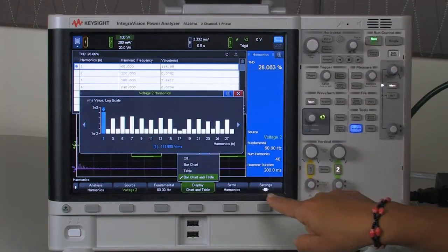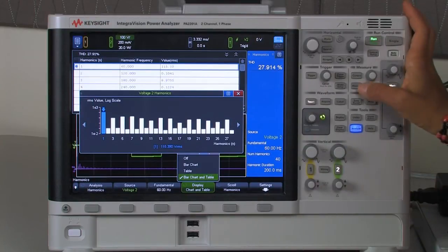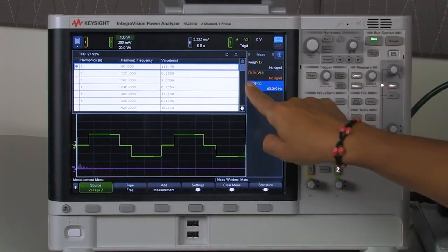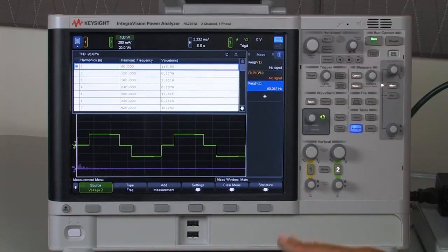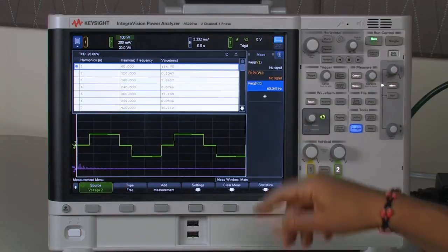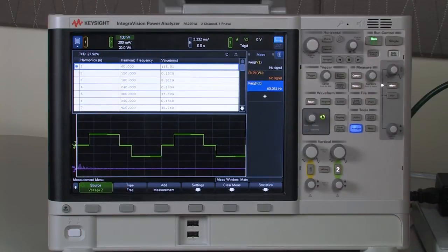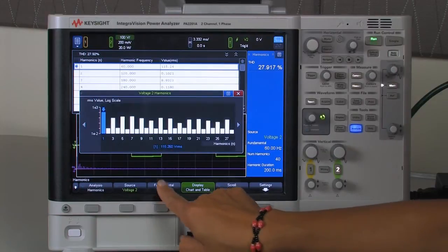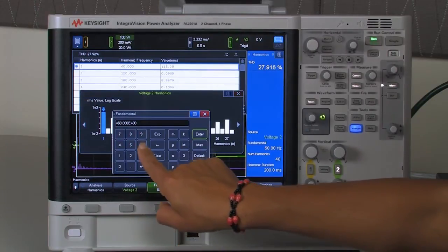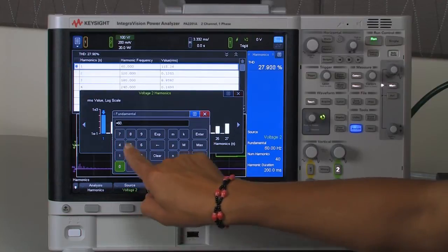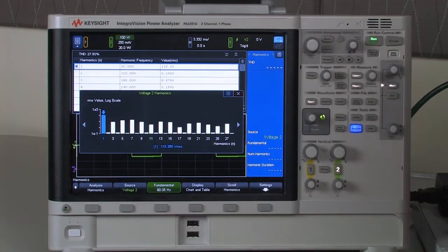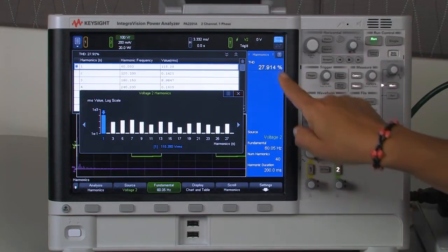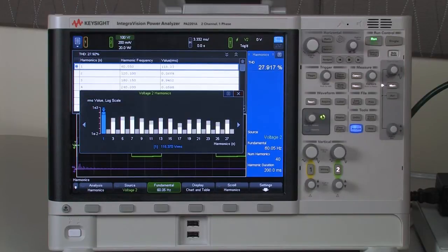Another thing I may want to do is go to measure. If I look at my frequency, actually it's a little bit different. It's not exactly 60 Hz, it's 60.05. So now I can go back to this menu and enter the fundamental frequency more precisely, which will give me a more precise reading.